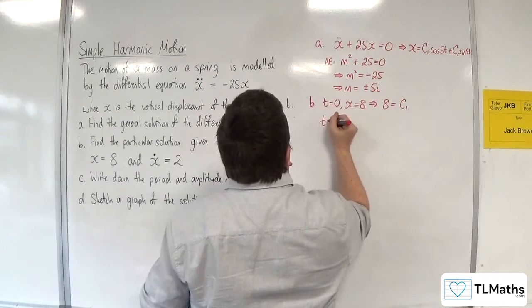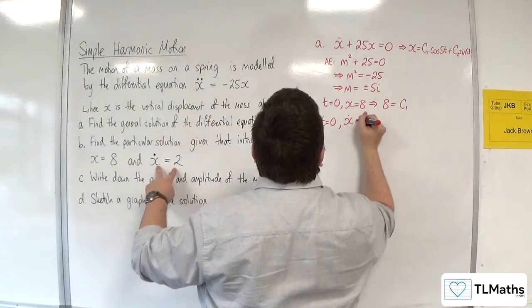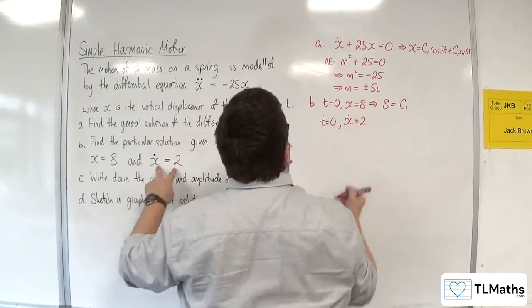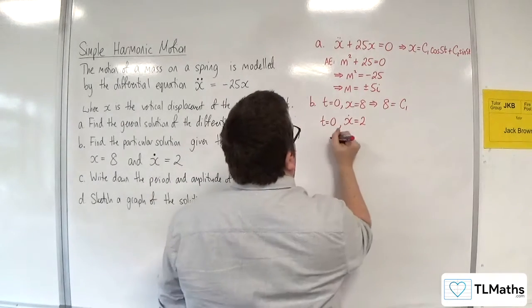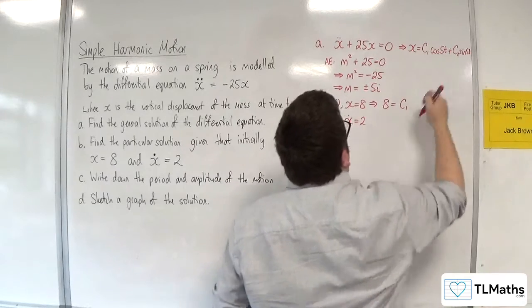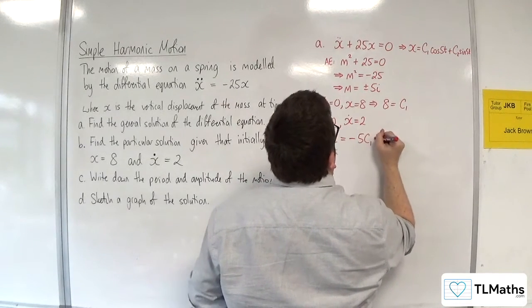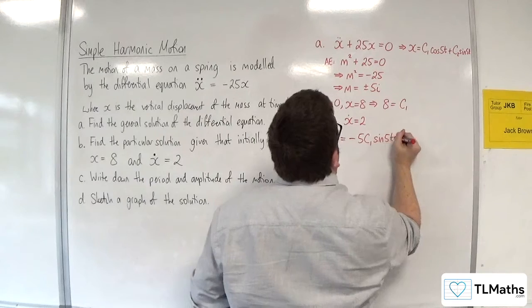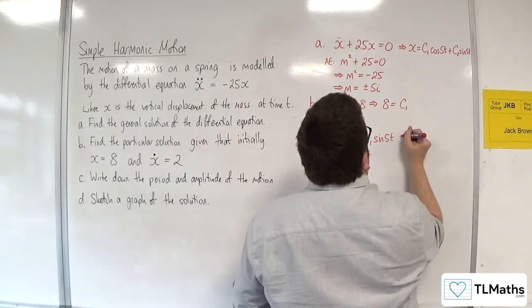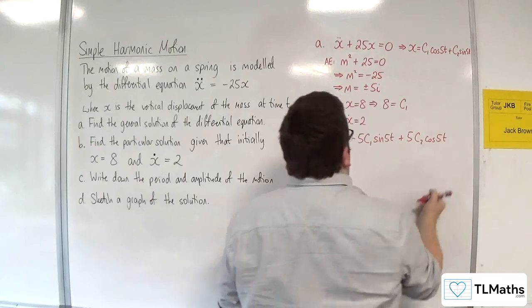Now when t is 0, x dot is equal to 2. So I need x dot, so differentiate this. So we would have minus 5c₁ sine of 5t plus 5c₂ cosine of 5t.